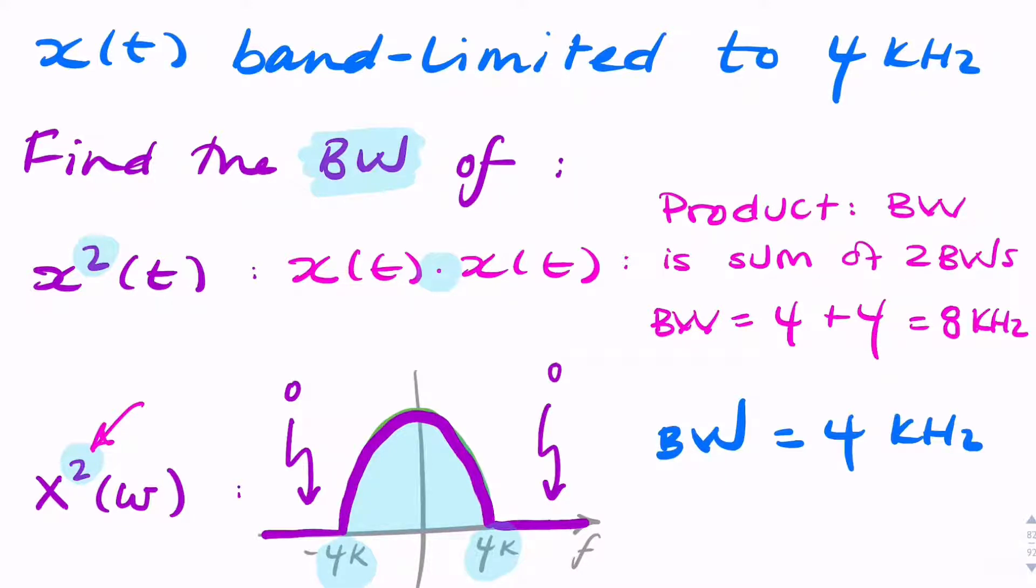So once we know the bandwidth, we can then calculate the Nyquist rate, which is double, twice the bandwidth.